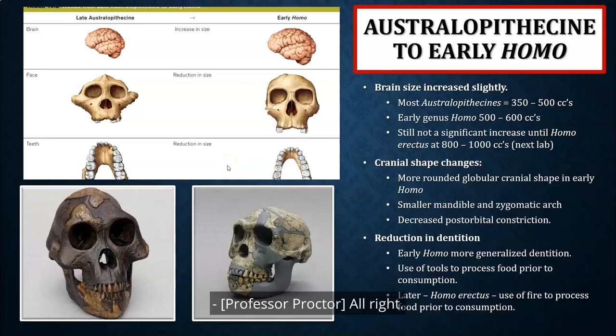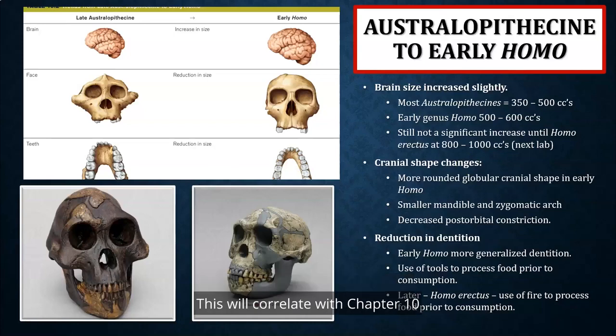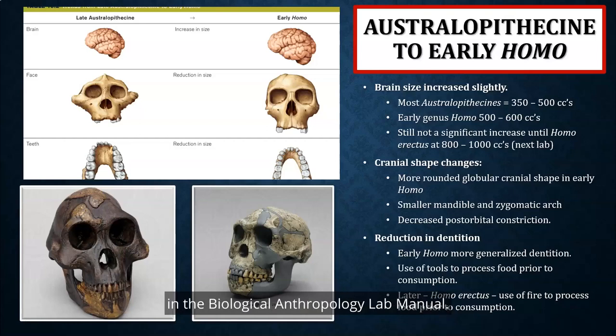This is the continuation of our presentation on the Australopithecines and early members of genus Homo. This will correlate with chapter 10 in the Explorations textbook, chapter 10 in the Essentials textbook, and also goes along with lab number 15 in the Biological Anthropology Lab Manual.